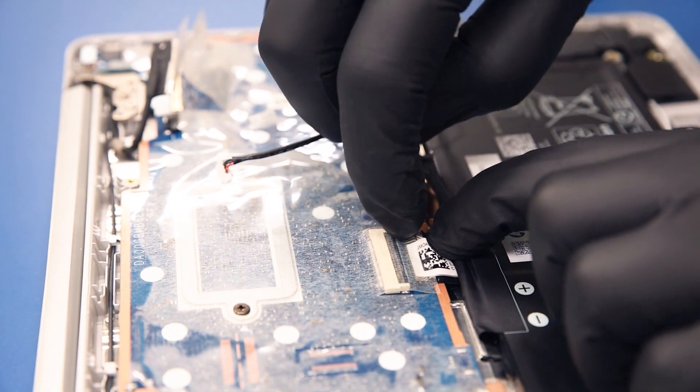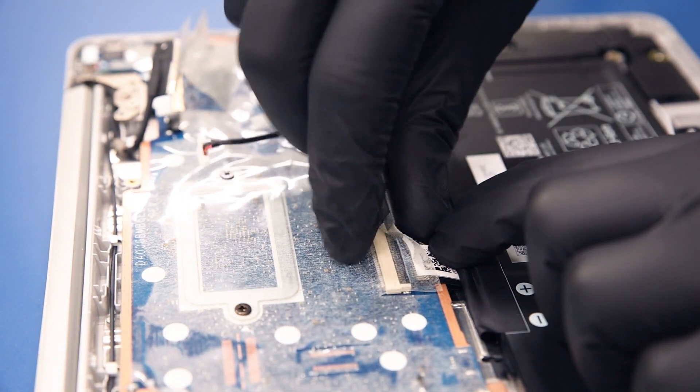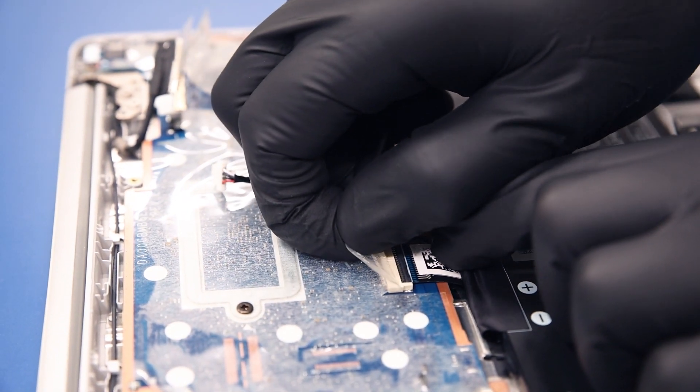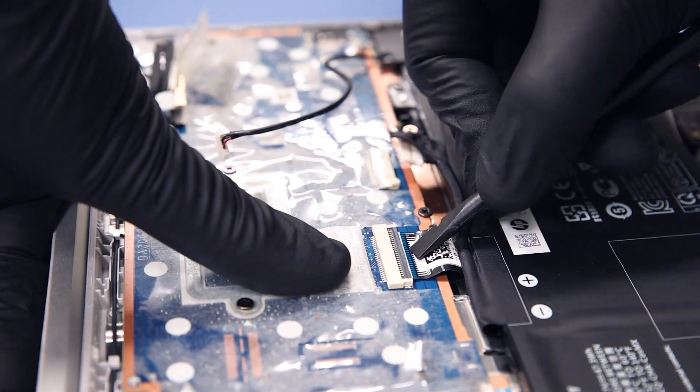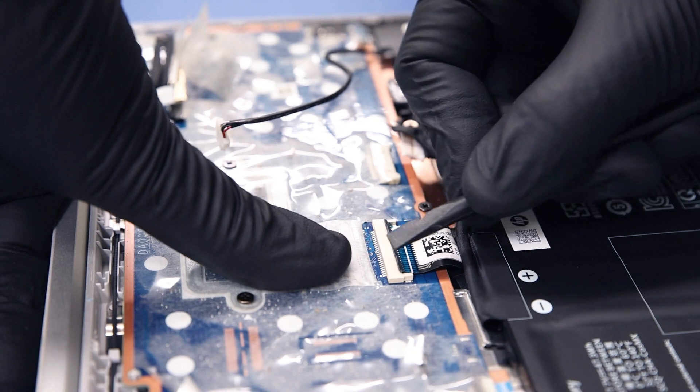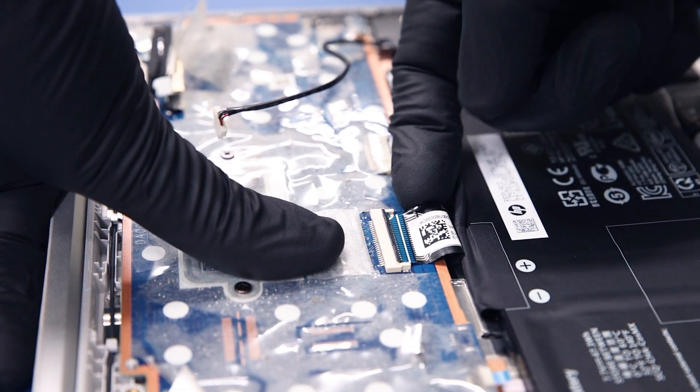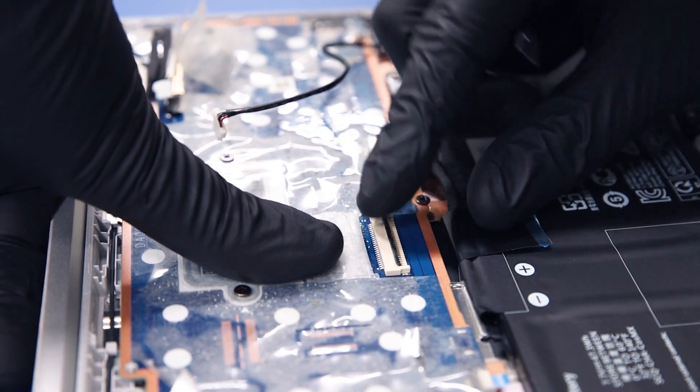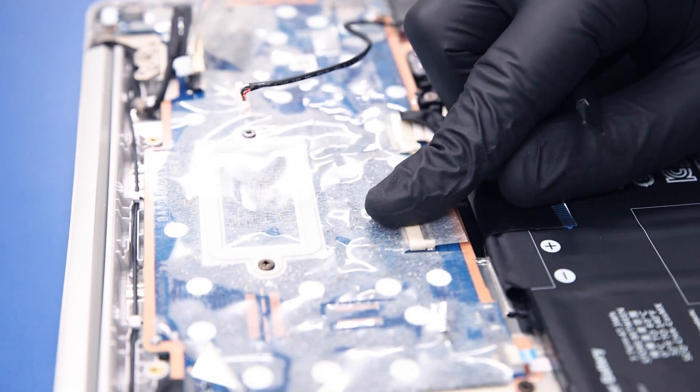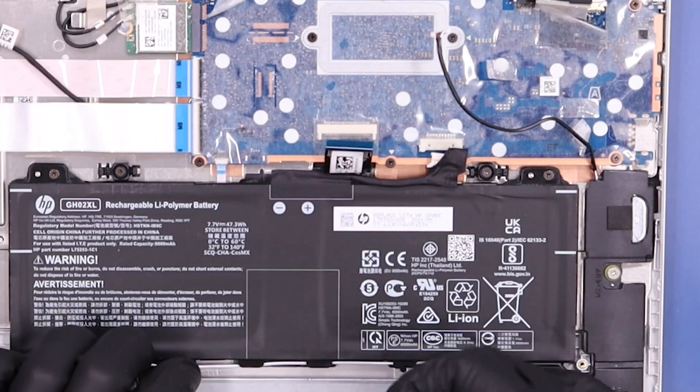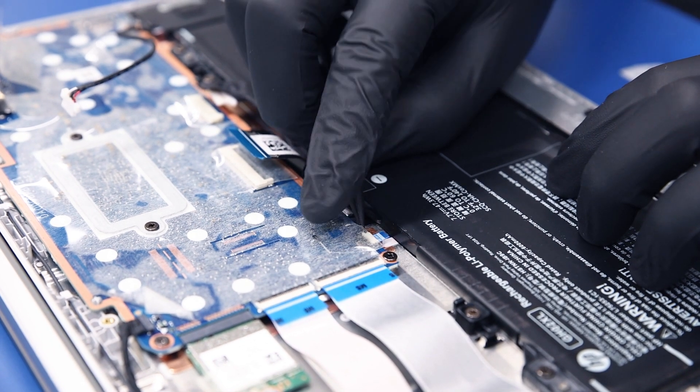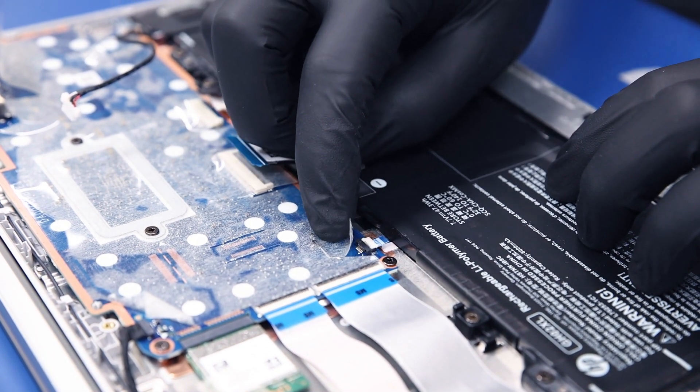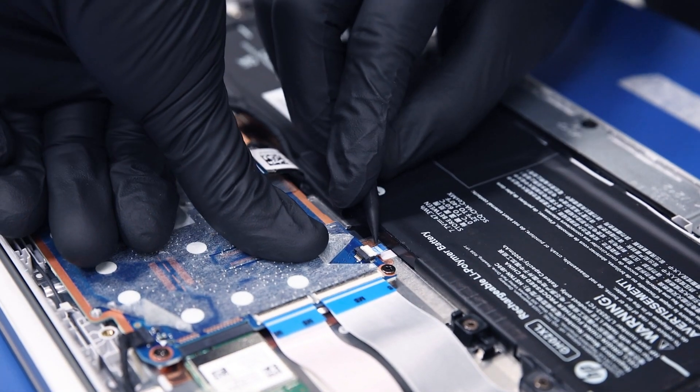Peel back the tape. Flip open the locking clip and unplug the daughterboard cables from the motherboard.